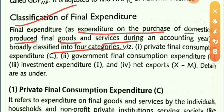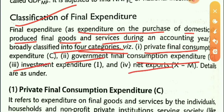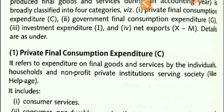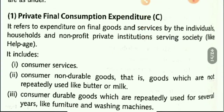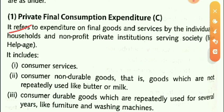The four categories of final expenditure are: first, Private Final Consumption Expenditure; second, Government Final Consumption Expenditure; third, Investment Expenditure; and fourth, Net Exports.